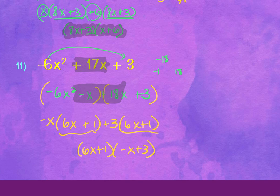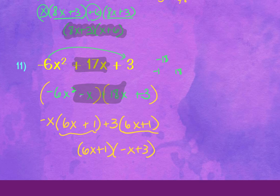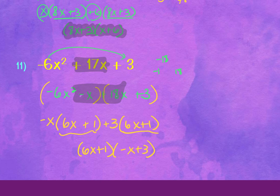That covers all the types of factoring. In tomorrow's section, we'll put them all together — there will be combinations like greatest common factor then difference of two squares, or GCF then perfect square trinomial. There's a video on the module that goes through all the types and how to approach them based on the number of terms. Tonight's homework is just this material; tomorrow it blends together. Friday's quiz covers all of it. Homework is on the website — show your work, especially for first-times-last steps — and it's due tomorrow.